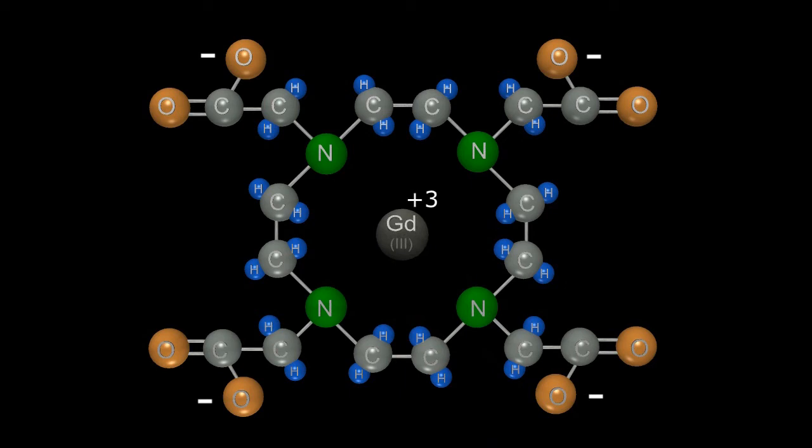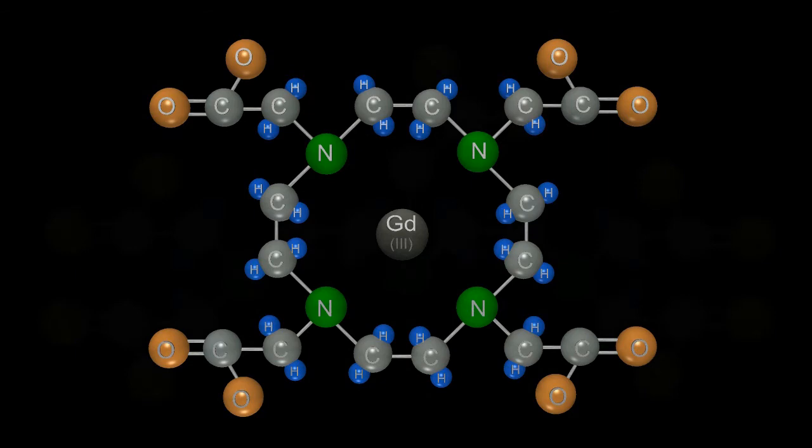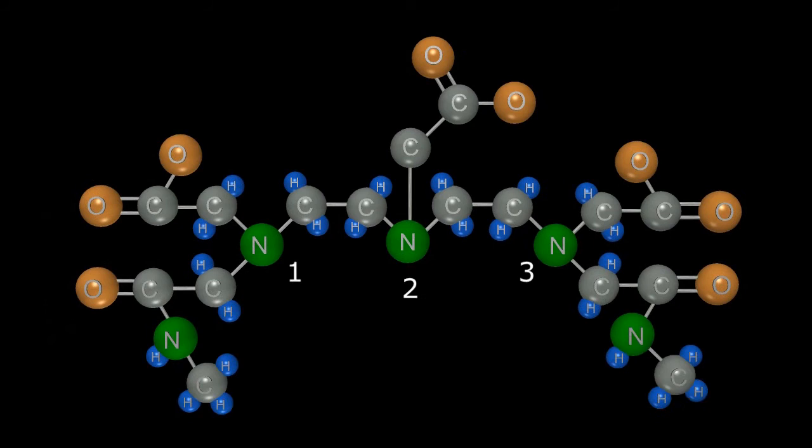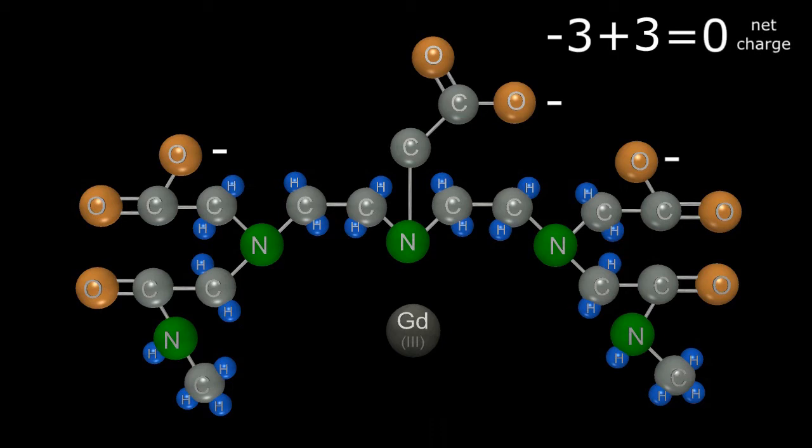Going back to our linear chelate, if we change two of our carboxylate side arms replacing the oxygen atoms with nitrogens, we still maintain the eight coordinate bonds of the chelate but this molecule now only has three negative side arms. Binding to the plus three gadolinium cation, the entire molecular complex is neutral. This chelate is linear and non-ionic, the configuration with the highest theoretic risk of NSF.